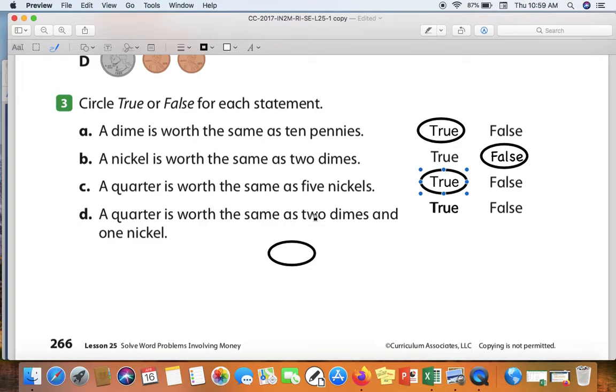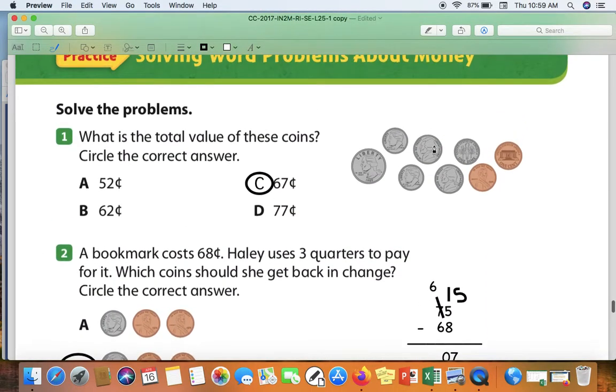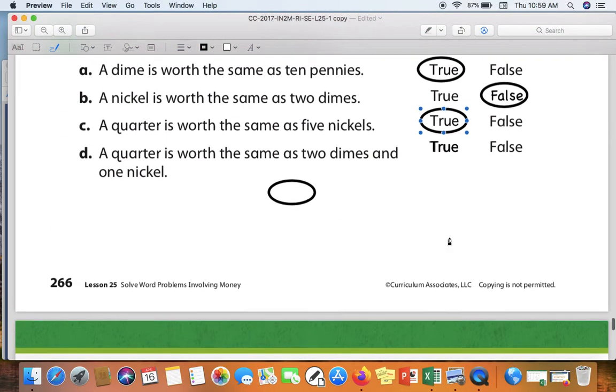A quarter is worth the same as two dimes and one nickel. If you remember, that's kind of what I was trying to point out back here. Instead of saying twenty-five, thirty-five, forty-five, fifty, we could just picture this as a quarter, dime, dime, nickel, ten, twenty-five, and say twenty-five, fifty. So is a quarter the same as two dimes and a nickel? Yes, it is. That is true.